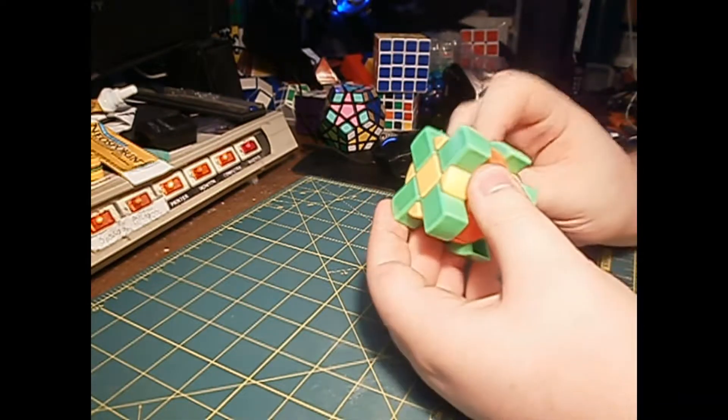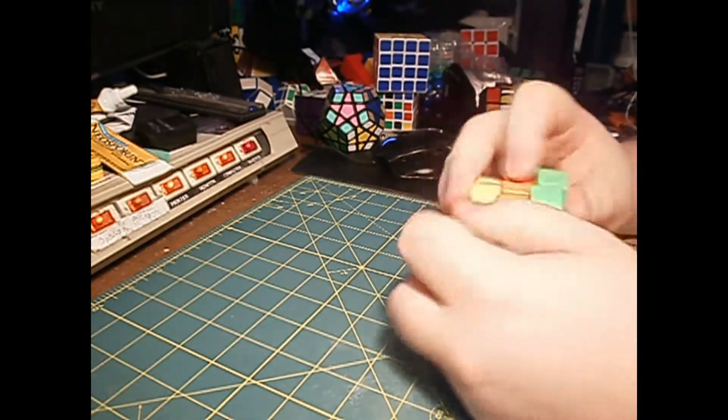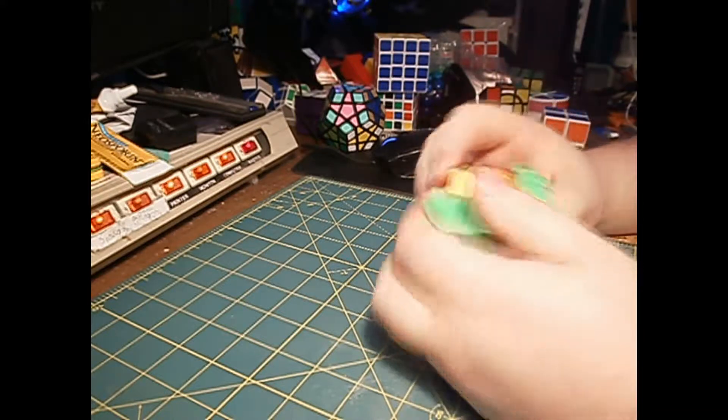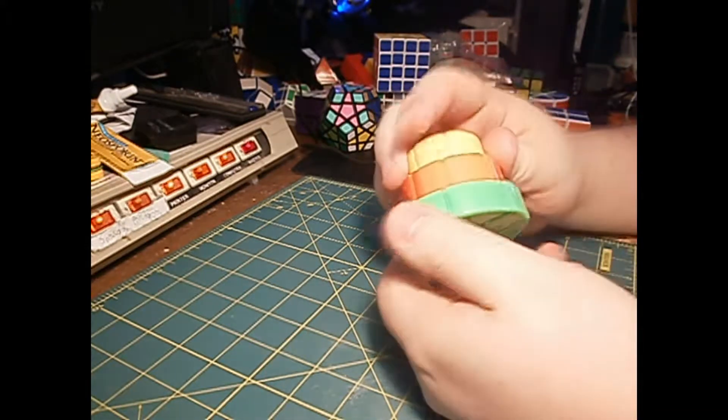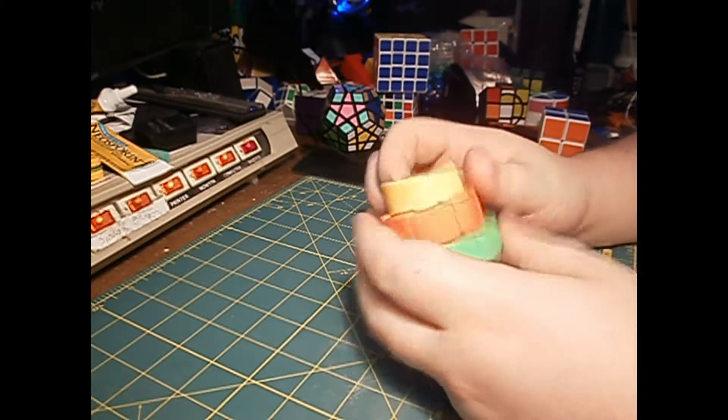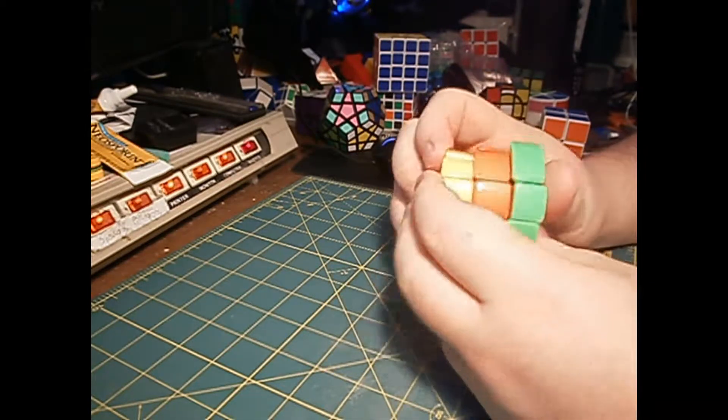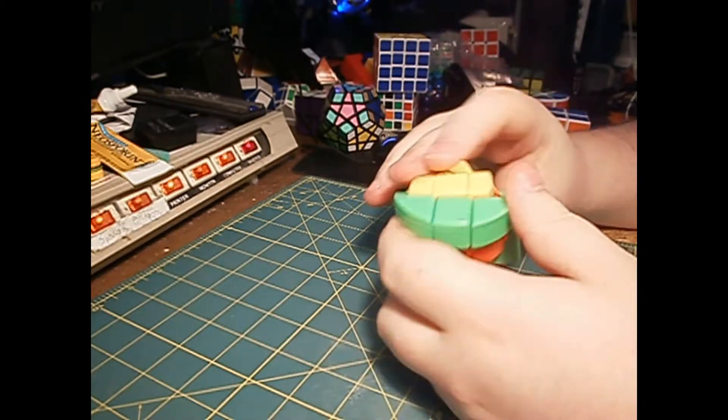So this is a 3x3x3 mod. For some reason they have it as a windmill, but it really is a cake. So this is the cake cube.